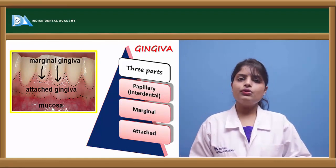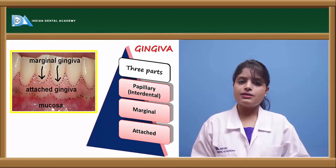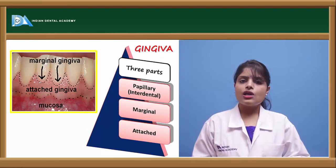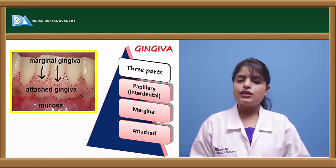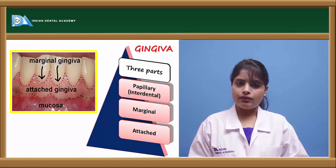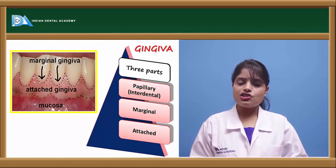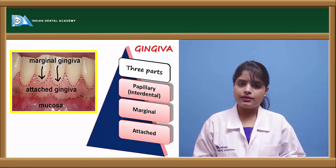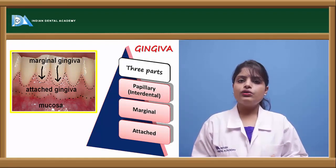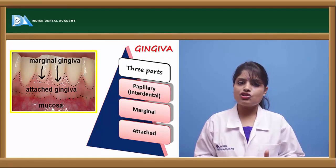Papillary gingiva is the part of the gingiva which fills the interdental spaces between the teeth, and is also known as the gingival papilla. The marginal gingiva circumscribes the crevices of the teeth and the margins around the teeth in the cervical region.